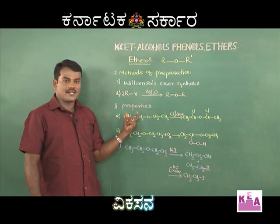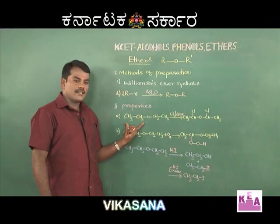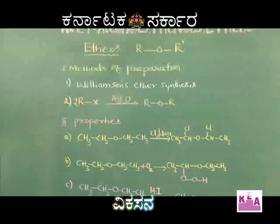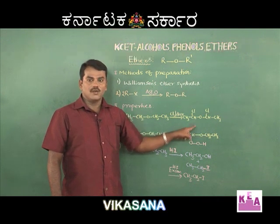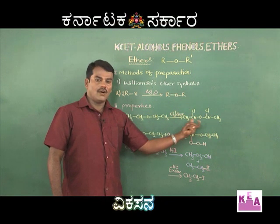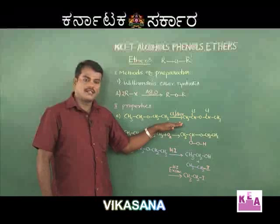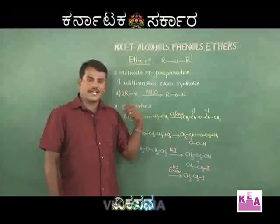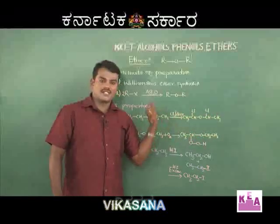Now let us look at the properties of ethers covered in your syllabus. The first is reaction with halogens like chlorine. The reaction takes place in dark and cold conditions, and substitution occurs on either side of the ether linkage — one or more hydrogen atoms on either side of the oxygen atom are replaced by a halogen atom. If exposed to sunlight, all hydrogen atoms can be substituted by halogen atoms.